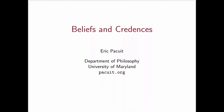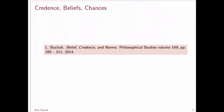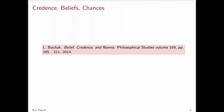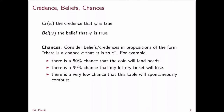In this lecture, I want to say a little bit more about beliefs and credences. To do that, I'm going to use an example from this very nice paper by Lara Bouchak called 'Beliefs, Credences, and Norms.' The credence in phi will be denoted by CR of phi — this is your graded belief, or the measure of how likely you think phi is true. And Bel of phi will be your full belief in phi.